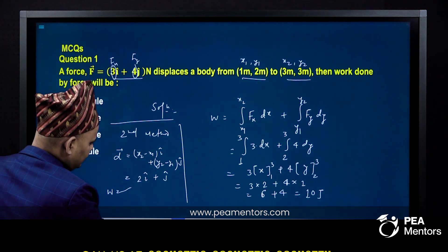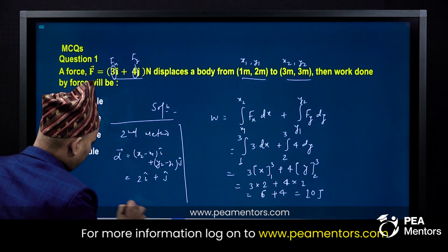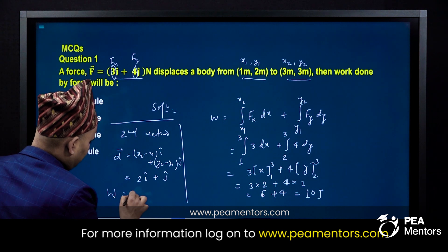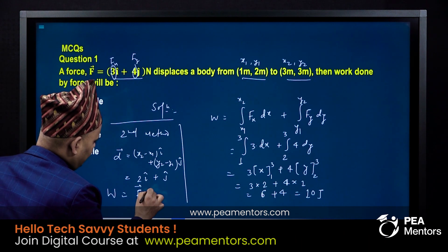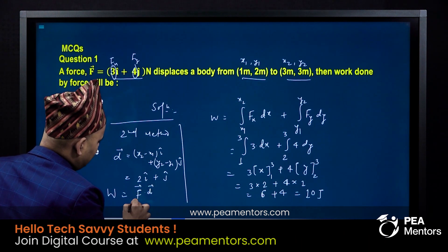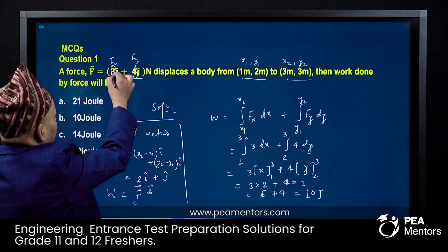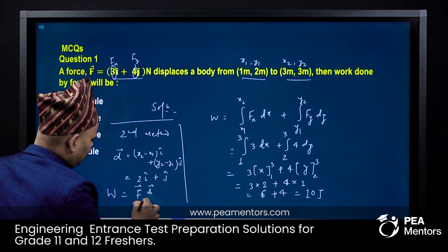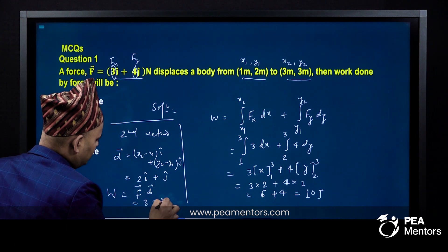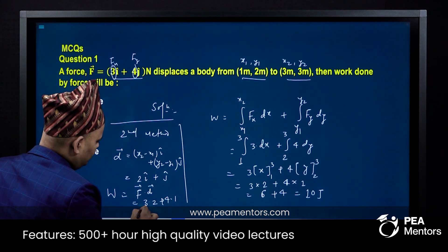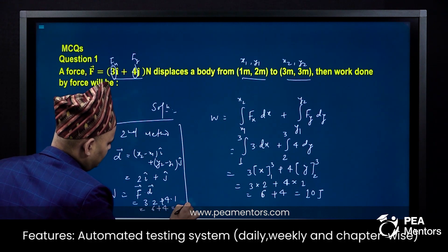Work done W equals F dot d. So work done W is F dot d. i dot i gives 1, j dot j gives 1. So 3i dot i gives 3 into 2, plus 4 into 1. This becomes 6 plus 4, that is 10 Joule.